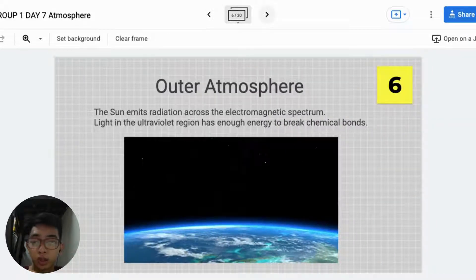Outer Atmosphere. The sun emits radiation across the electromagnetic spectrum. Light in the ultraviolet region has enough energy to break chemical bonds.